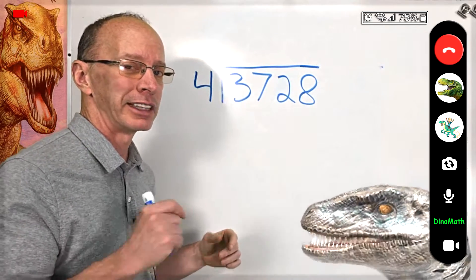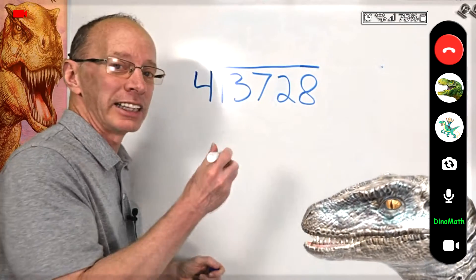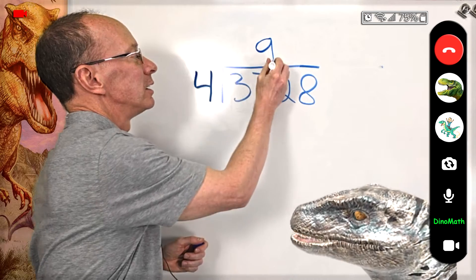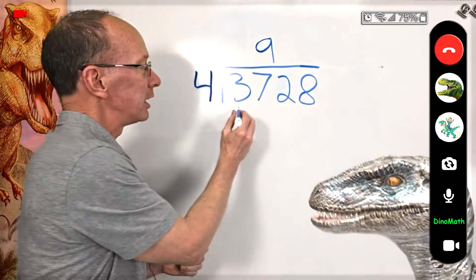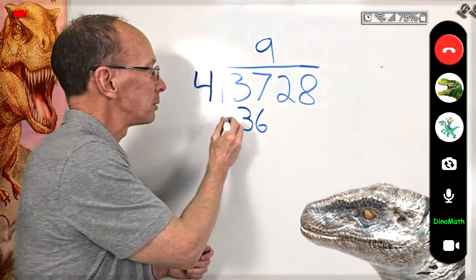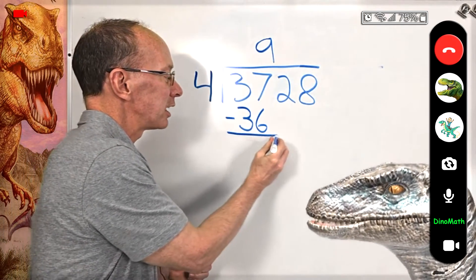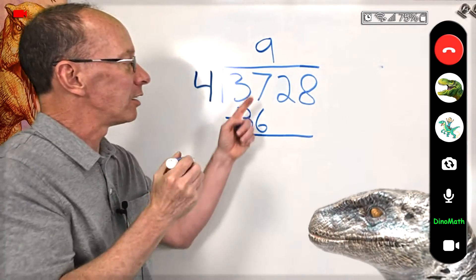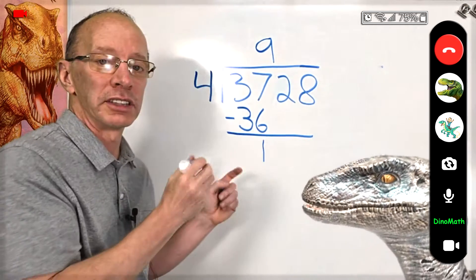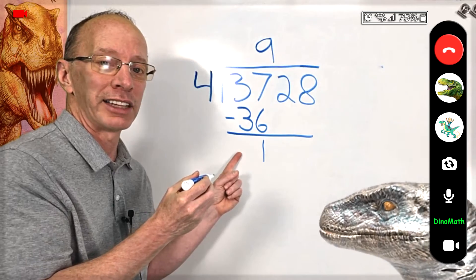So can I put 4 into 37? You can. How many times? Nine times. So 9 times 4 is 36. So I'm going to write the 9 right here. And 9 times 4 is 36. So I write the 36 right here. And now I'm going to subtract that. So I put the subtraction sign right there. And now 7 minus 6, 1. And 3 minus 3 is 0. You do not have to write that 0 right there.